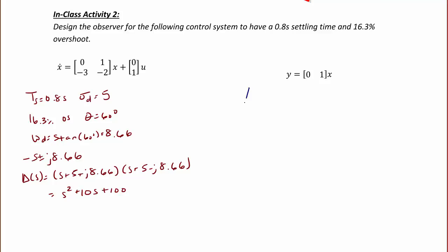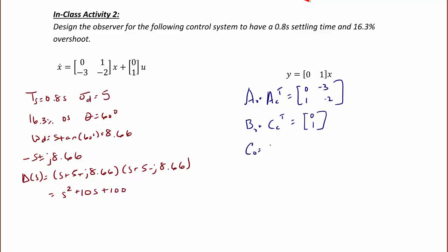Now let's find A_0, which equals the transpose of the controller A matrix: [0, -3; 1, -2]. B_0 is the transpose of the controller C matrix: [0; 1]. And C_0 is the transpose of the controller B matrix: [0, 1].